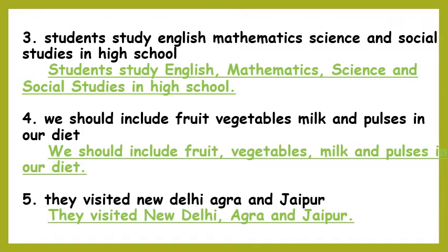Third: Students study English, Mathematics, Science, and Social Studies in high school. S of 'students' is the first letter of the sentence. English, Mathematics, Science, and Social Studies are proper nouns, so their first letters are in capital. We rewrite it as: Students study English, Mathematics, Science, and Social Studies in high school, full stop.